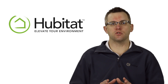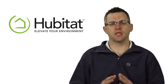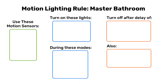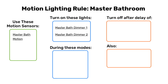As always, it's a great idea to plan your rules before building them. When motion is detected in the master bathroom, we want the lights to come on. In day mode, we'll set the lights at 95%. You'd be surprised how much energy you can save by dimming your lights just a little bit without any real perceptible difference in brightness.